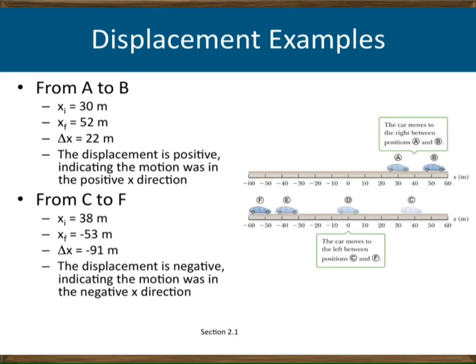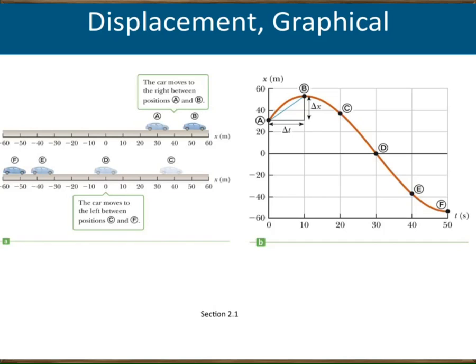We don't have specific time information about when the object was where during its motion, but we can show this using graphs — specifically the X versus T graph. On X versus T graphs you have all the information about the motion of an object: its position, speed, velocity, instantaneous velocity, acceleration, and average acceleration.